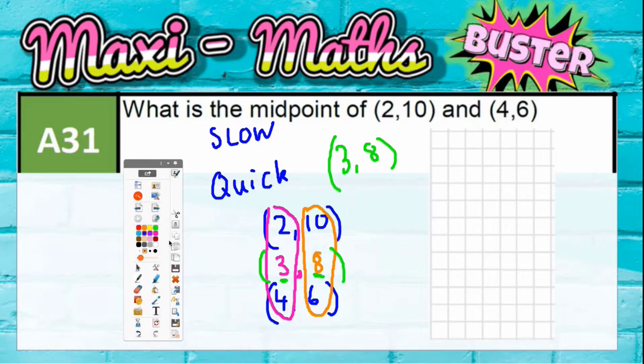Just to prove to you that the slow way would also work, you could actually draw it out. So 0, 1, 2, 3, 4, 5, 6, and 1, 2, 3, 4, 5, 6, 7, 8, 9, 10. So if you draw a pair of axes, plot the points you're given.